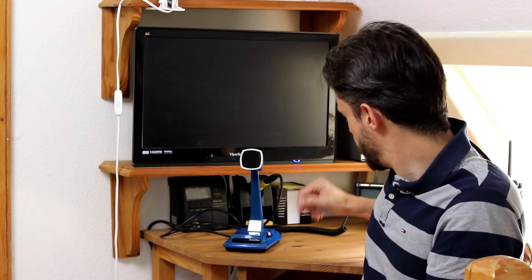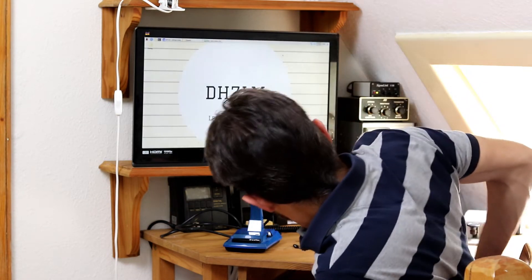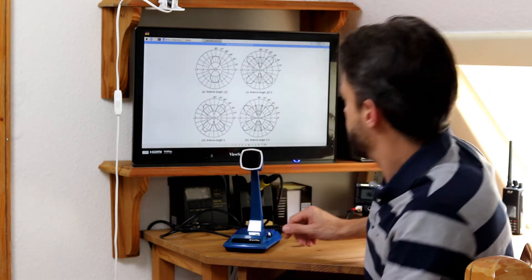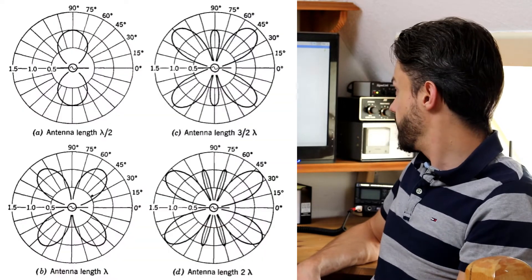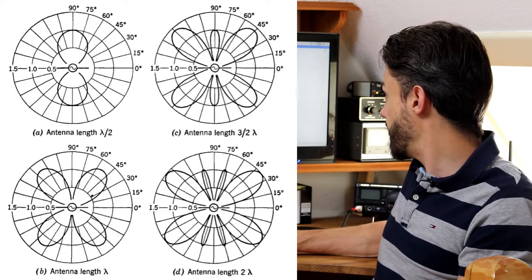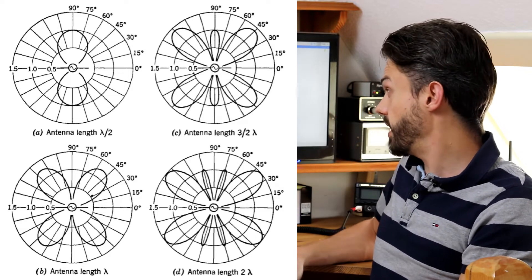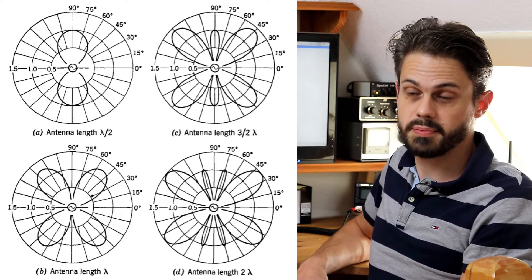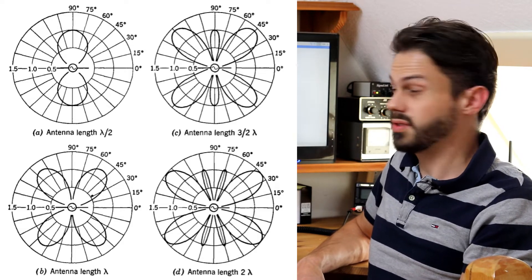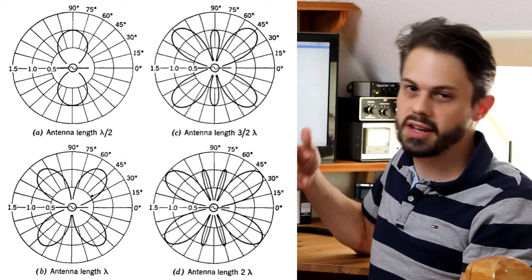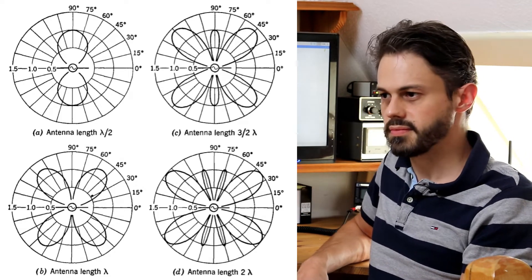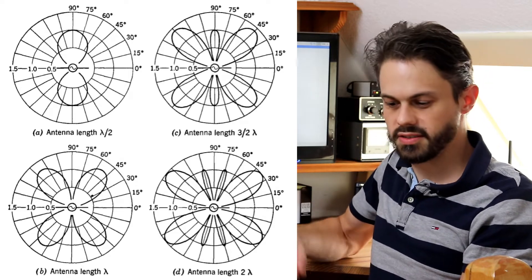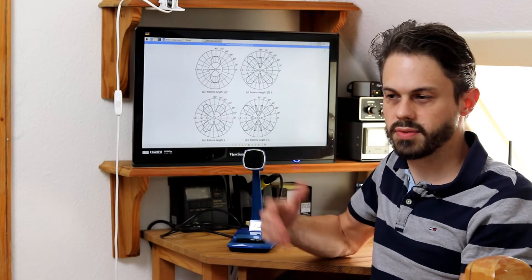And to see what I mean I got here some radiation pattern for dipoles using different wavelengths. And this is if you have a dipole for 40 meters for example and you use it on 20 meters then you're using it as a full wavelength antenna. So it's like 20 meters long for 40 meters and for the 20 meter band, 20 meters is one wavelength.